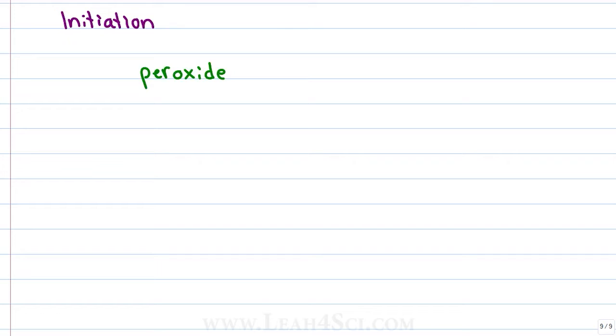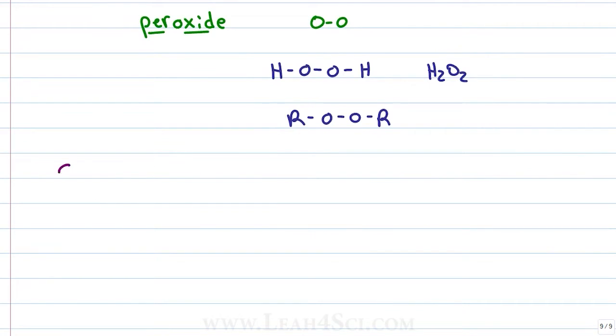Recall from general chemistry that peroxide or per-oxide is a molecule that has an oxygen bound to another oxygen atom. You're probably very familiar with hydrogen peroxide, H2O2. And you've likely come across some alkyl peroxides written as ROOR. For this reaction, we'll look at a methyl peroxide which is a CH3 bound to an oxygen, bound to an oxygen and bound to another CH3.